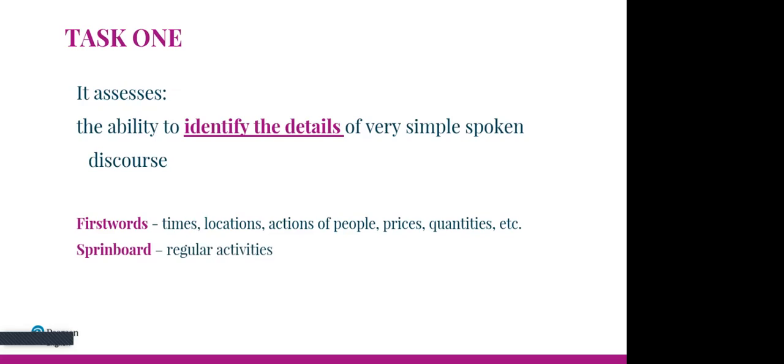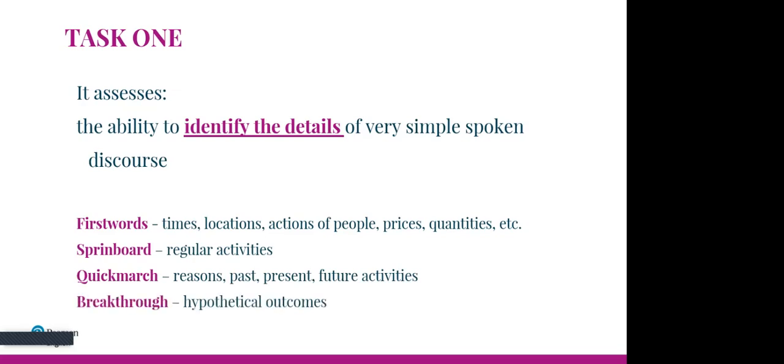On top of that, for Springboard there will also be regular activities. For Quick March — level three — what is tested includes reasons, past, present, and future activities. And for Breakthrough, additionally, hypothetical outcomes. These details that test takers have to identify reflect the language content for particular levels. Every level has a specific language content, and this is reflected in the kind of details they have to identify.